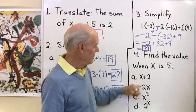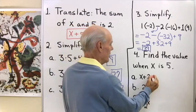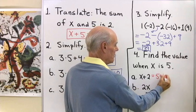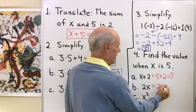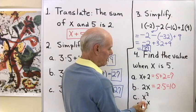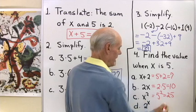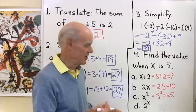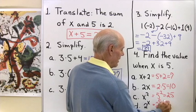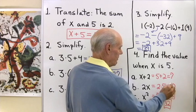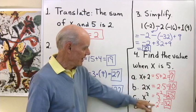Let's find the value of each expression when x equals 5. This is a substitution problem: substitute 5 for x. So x plus 2 becomes 5 plus 2, which is 7. Then 2 times x becomes 2 times 5, which is 10. x to the second power becomes 5 squared, which is 5 times 5 or 25. And 2 to the x power becomes 2 to the fifth power, which is 32.